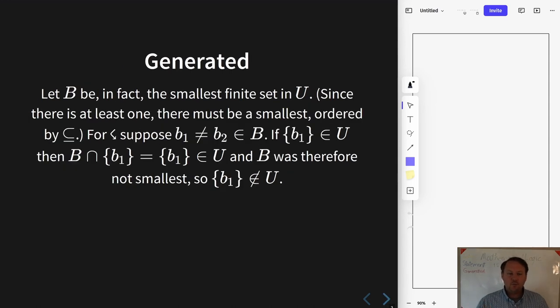So I next want to motivate this move that I make here at least a little bit because I can imagine it seeming somewhat mysterious. Why would I consider the smallest finite set in U? If that's not interesting, then fast forward. But here I'm going to talk it out a little bit.